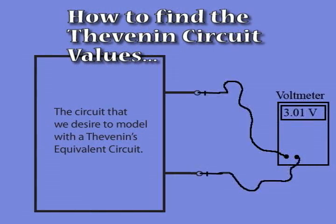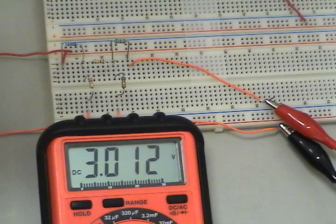The circuit that we desire to model can be viewed as a black box. To this black box, we attach a voltmeter. We read the voltage when no load is attached to the terminals. This will give us the Thevenin voltage that we should use for the voltage source.